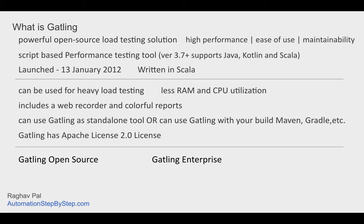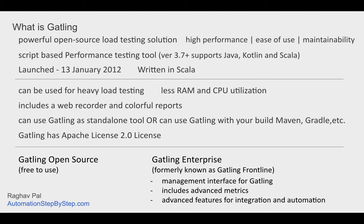Gatling has two versions: Gatling open source and Gatling enterprise. Gatling open source is free to use and Gatling enterprise is a paid solution. We will be able to do all our performance tests using the open source version. Gatling enterprise has advanced features like a management interface, advanced metrics, and reports. For now we will focus on Gatling open source.